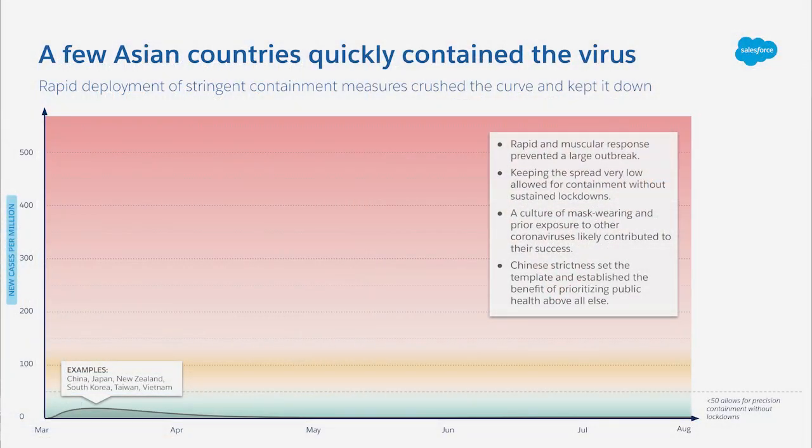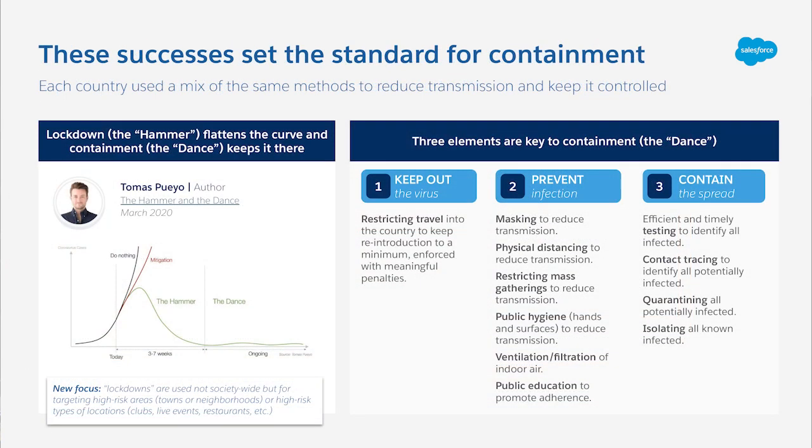Mostly in Asia, a few countries did a good job of containing the virus: China, Japan, New Zealand, South Korea, Taiwan, and Vietnam. They've all had some outbreaks since then, but in each case they were down in the green zone and have been able to mostly contain it. As long as they're able to do that, this is what we have called the dance.